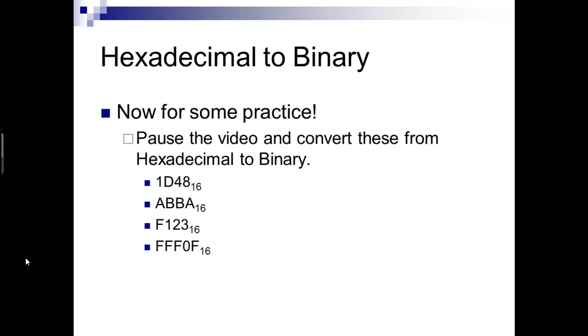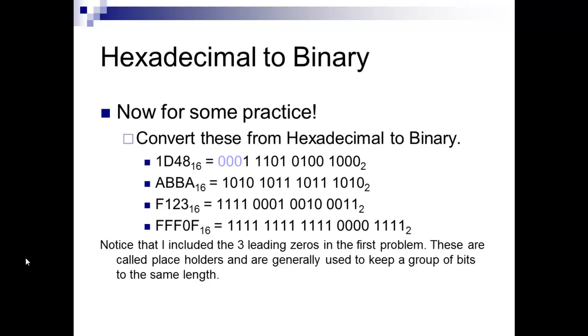So practice these, pause it, and we'll come back and show you the answers. There's the answers. And again, the leading zeros, I add these just because you should keep all your zeros. That way it keeps it as a nice even groups of four. It's not really required necessarily, but it's good to keep them in the same grouping sizes as all the rest of them. Keep zeros in that case. And this is actually the last video of the three. This concludes the numbering systems section of the lecture. And if you have any problems, email me. I'll try to get back with you.